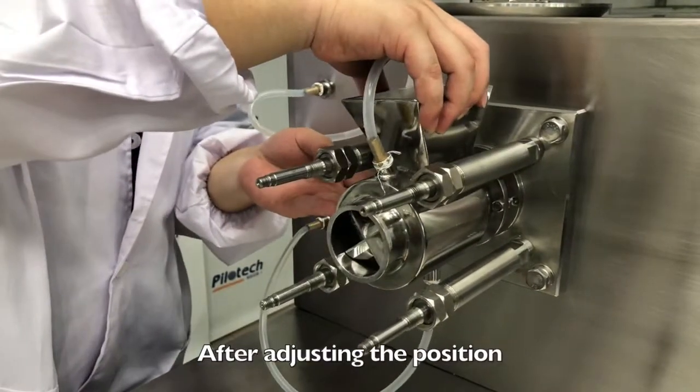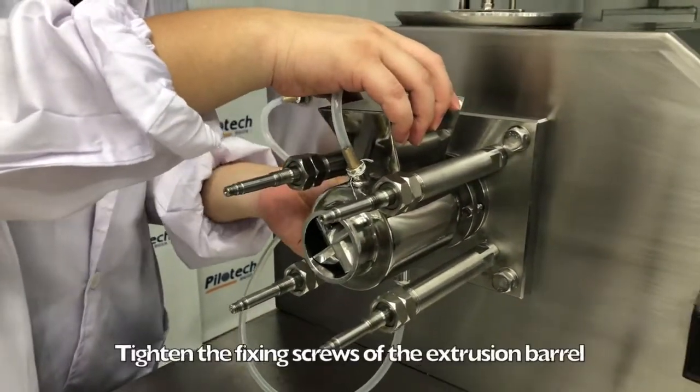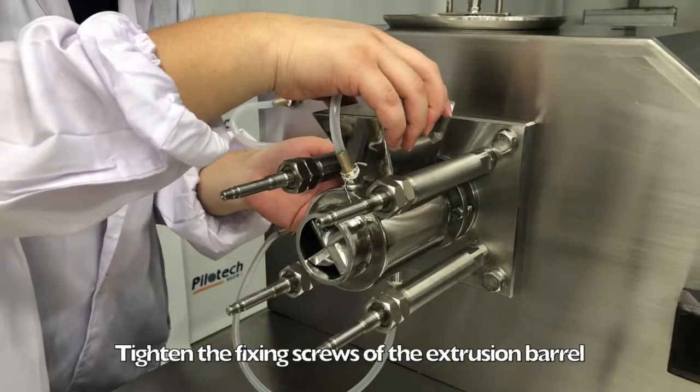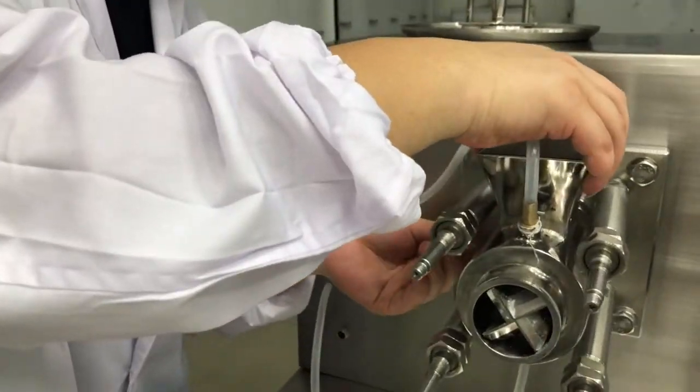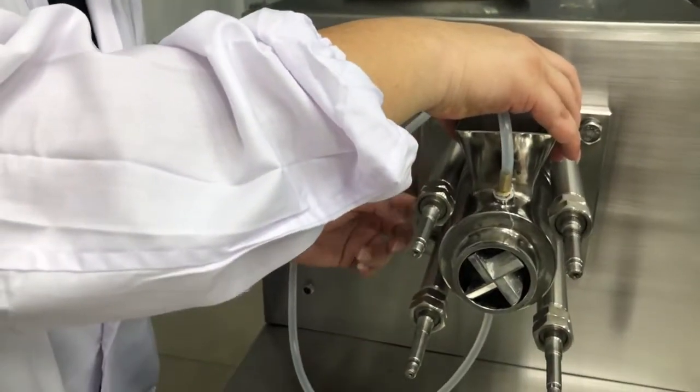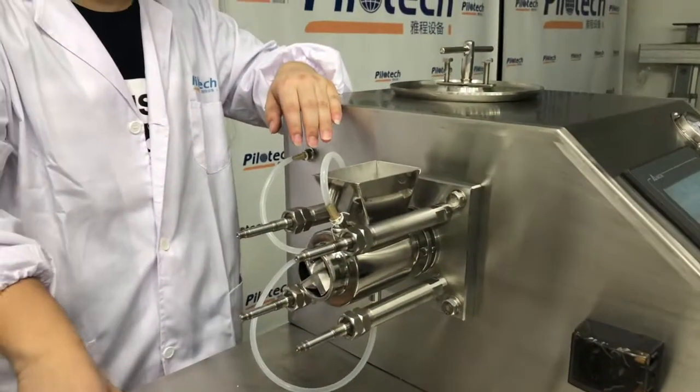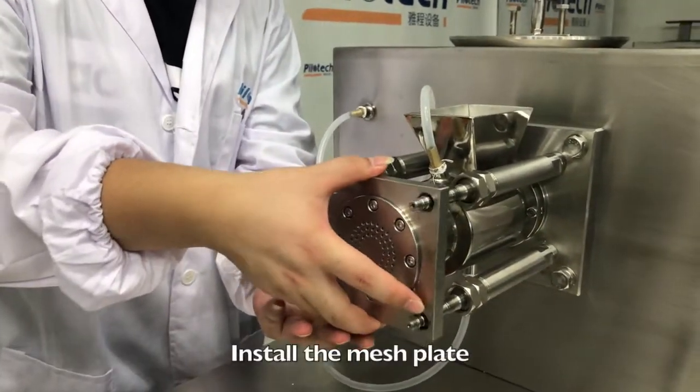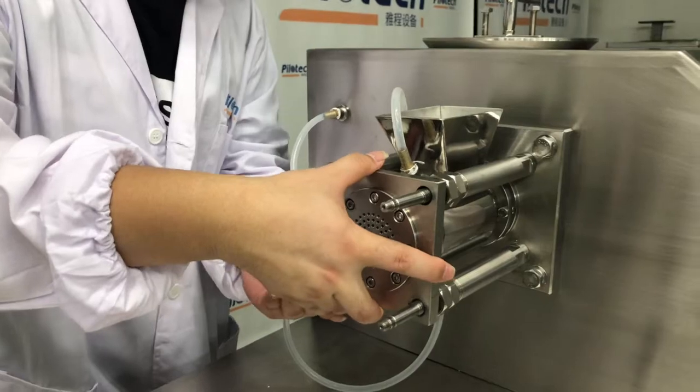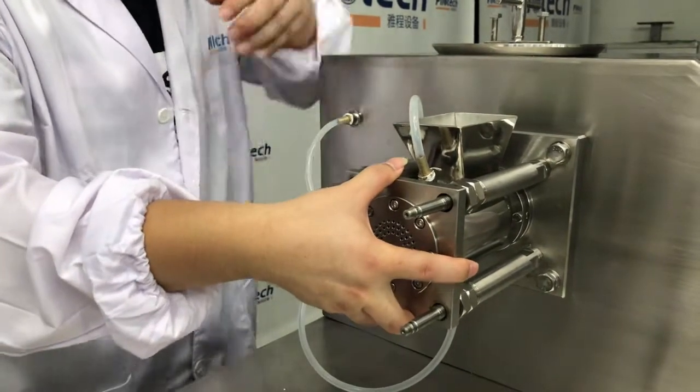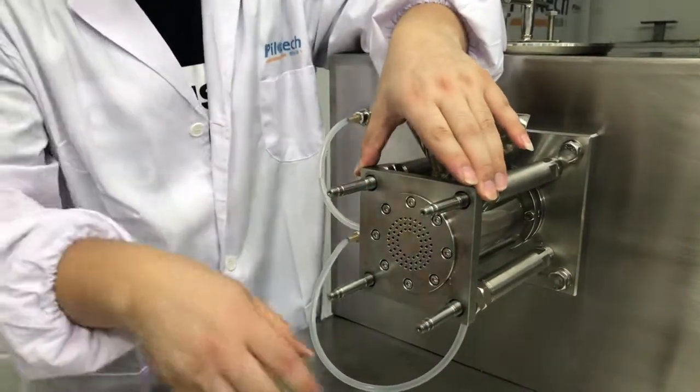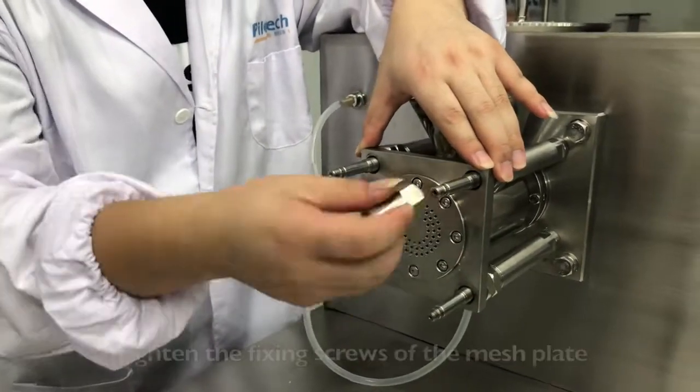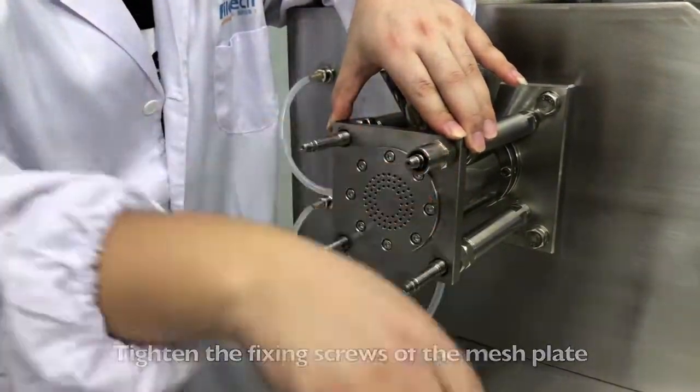After adjusting the position, tighten the fixing screws of the extrusion barrel. Install the mesh plate. Tighten the fixing screws of the mesh plate.